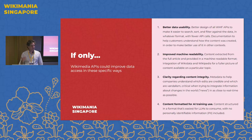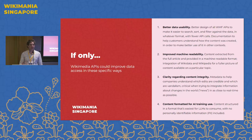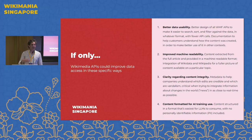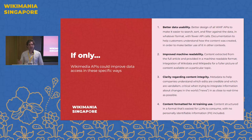They also want better documentation to help customers understand how the content was created — not just documentation about how to use the APIs, but about the content creation process itself. The lack of understanding about how the content was created can affect the way they think about how to use it. For example, we were talking to one company that's been working with our data for over a decade. At one point, one of them said, 'Anytime an editor has had X number of revisions, we just assume that editor is not a good editor.' I said, don't do that — that's not right. They've made a lot of algorithmic assumptions that do not necessarily understand the social context and social infrastructure in which this content is created.